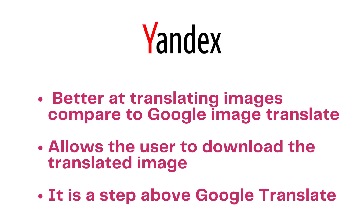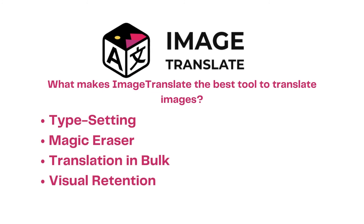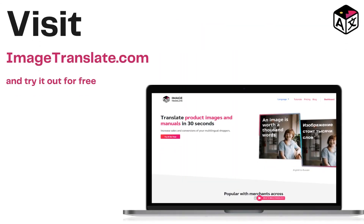Conclusion: Yandex Image Translate is surely better at translating images when compared with Google Image Translate, which only provides translation of the text and not the image itself, and does not allow the user to download the translated picture. That positions Yandex Image Translate in the center of the gradient of picture translation tools — where at one end there is Google Translate and on the other side is ImageTranslate.com, offering more flexibility for translating images. The typesetting and magic eraser feature make Image Translate a unique tool for translating images in bulk, and certainly the best tool for translating pictures. Try out translating images for free at www.imagetranslate.com.